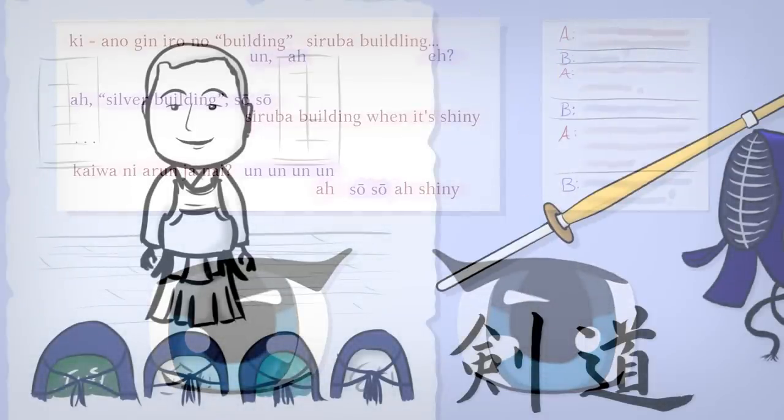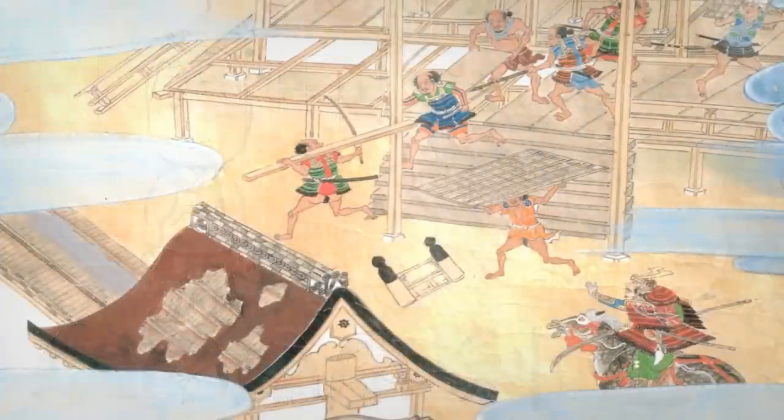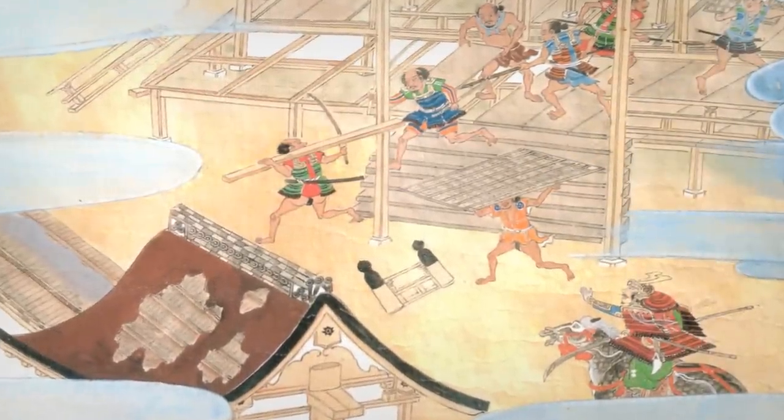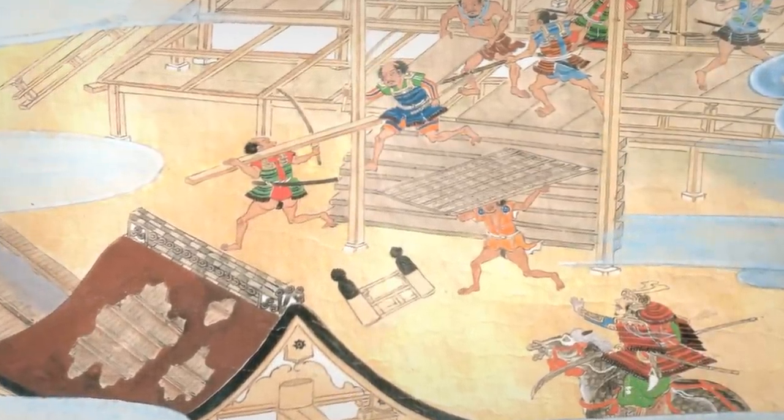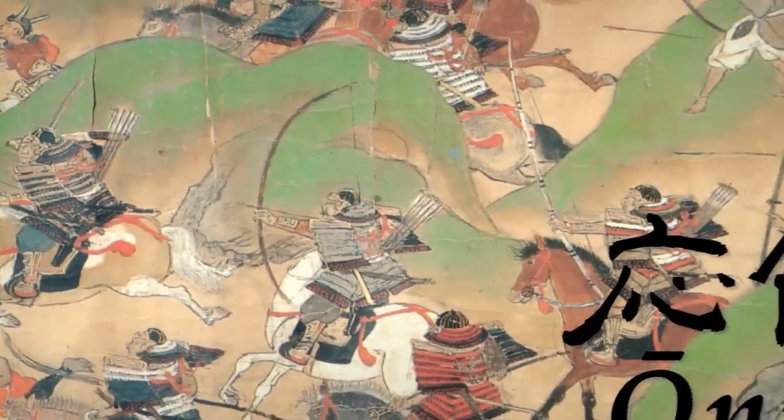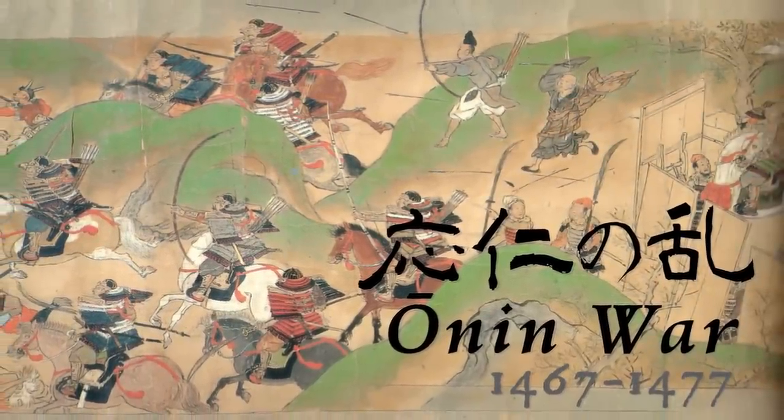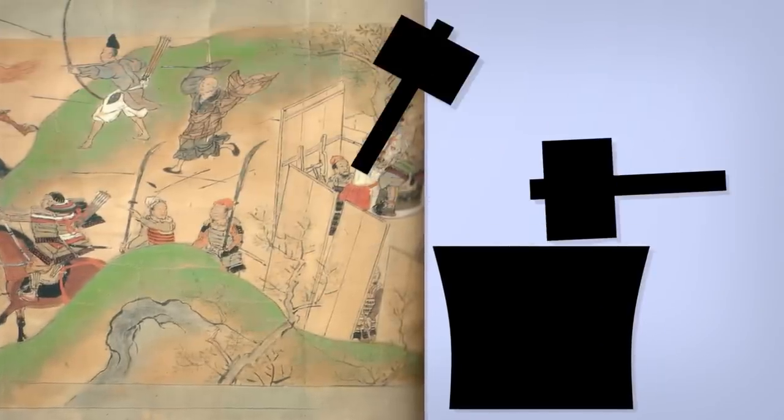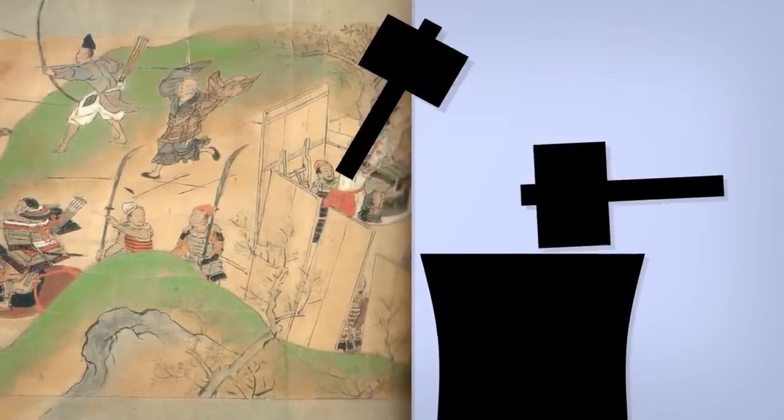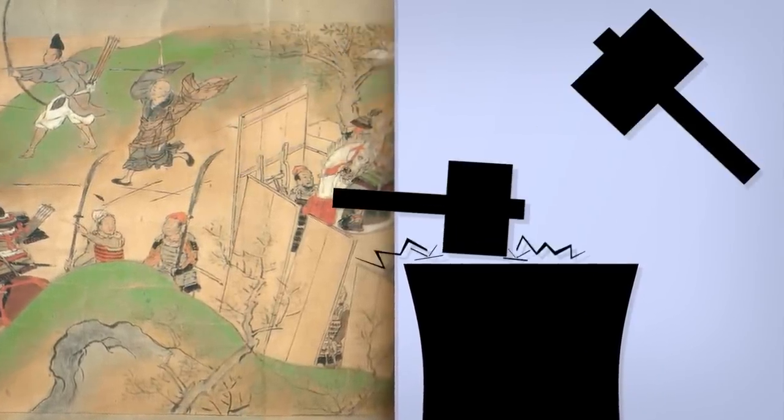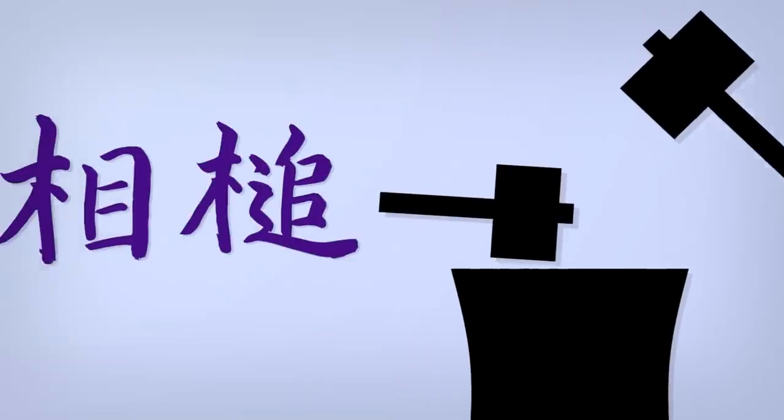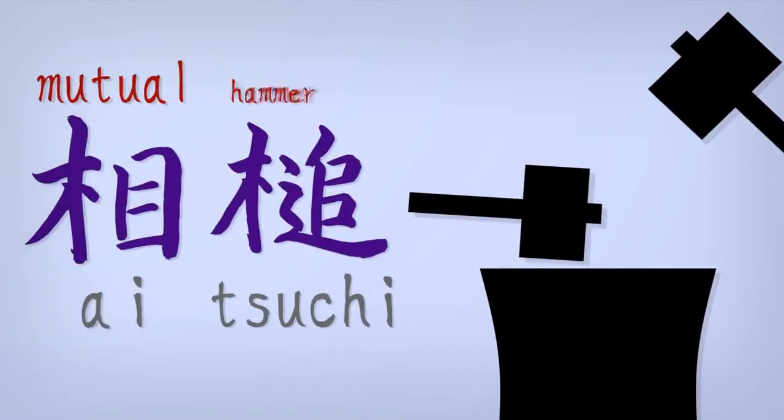To see why, think back to kendo. Not kendo with my sensei, but 550 years ago, when a struggle for shogunate succession broke out into the intense Oni no Ran. Warriors trained to take up the sword, and iron workers to produce them. As swordsmith and apprentice hammered together back and forth, they coined a new term. Aizuchi, mutual mallet.